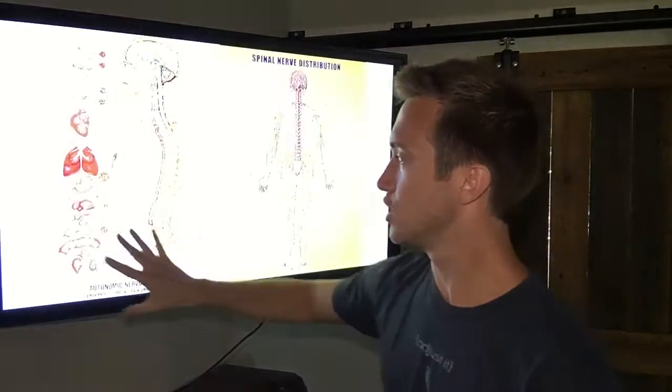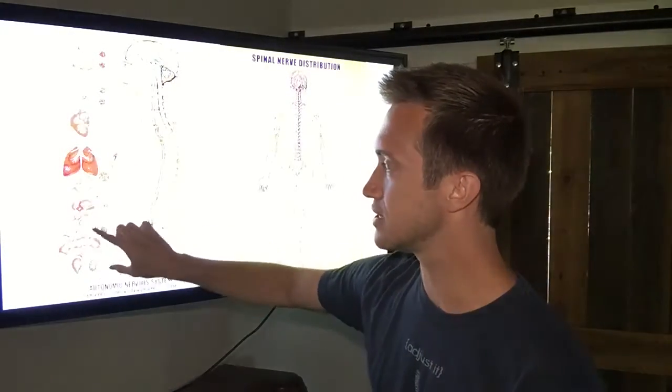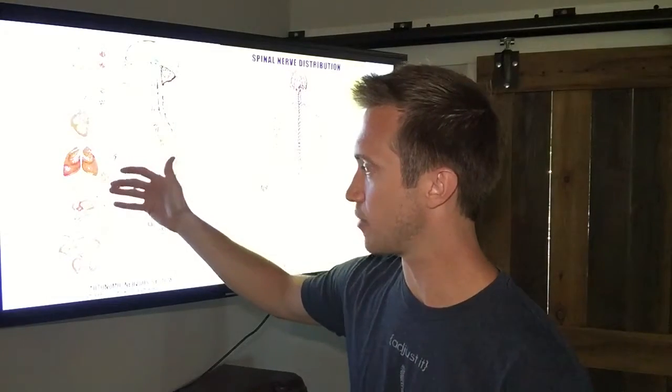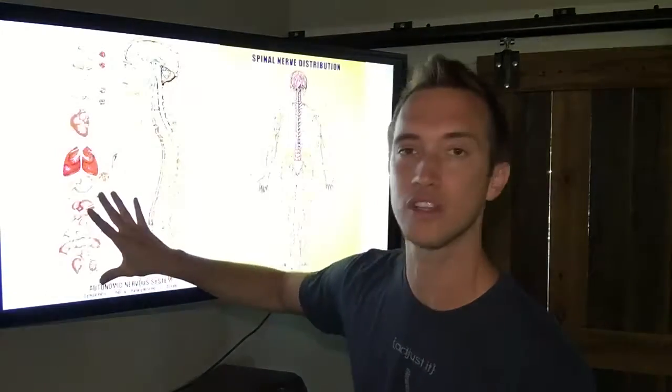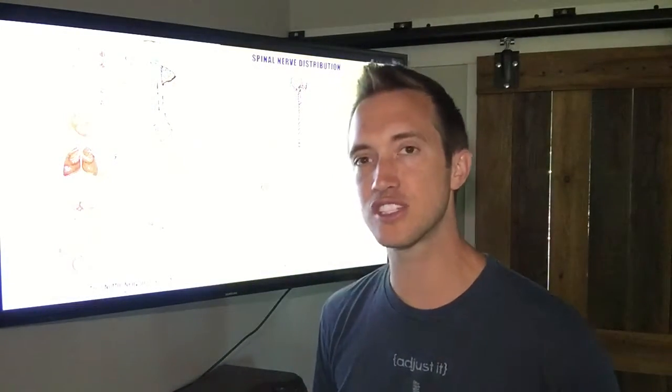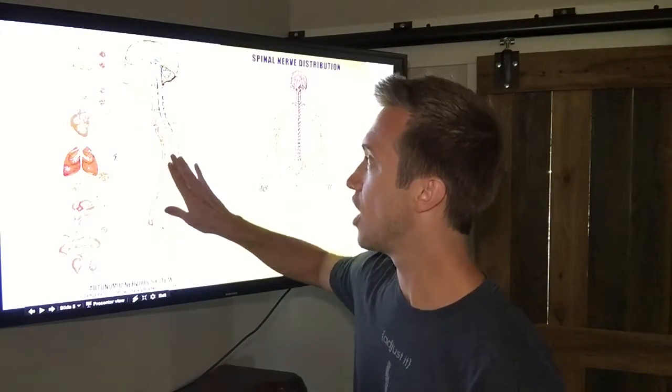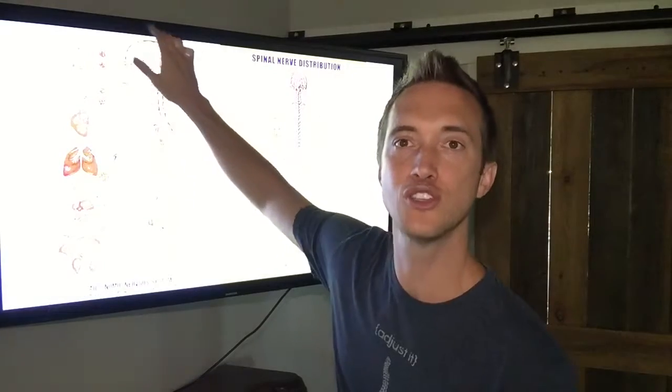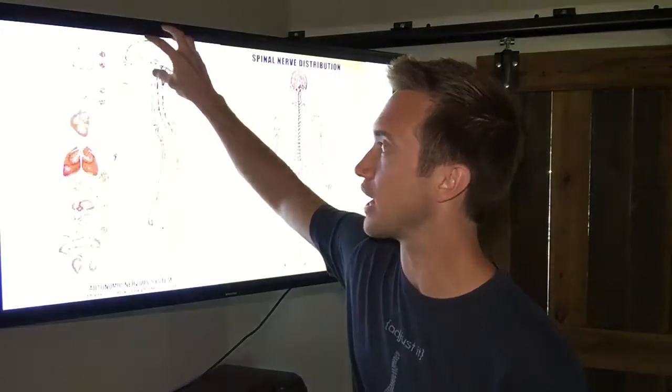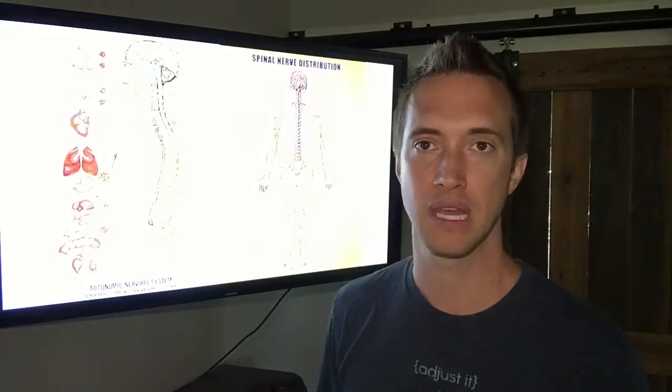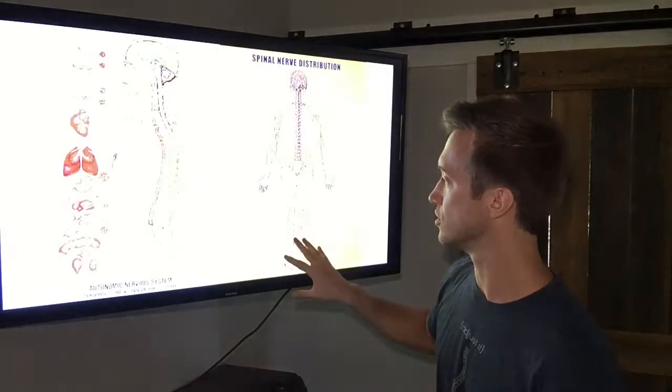Your body is constantly communicating with your brain through all of these nerves. So what happens is your body, all of your organs, if your heart's beating, when your lungs are breathing, your stomach, your liver, kidneys, all these different organs as they're functioning, they're sending feedback through the nerves, up the spinal cord, to your brain, so that your brain understands everything that's going on in your body.